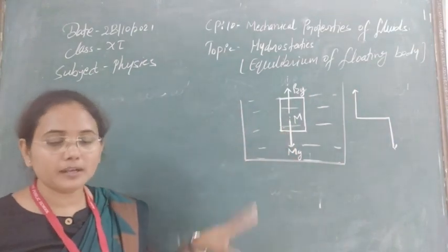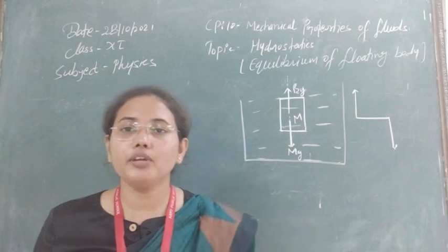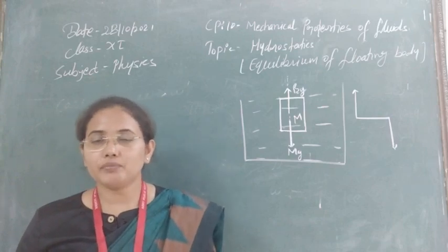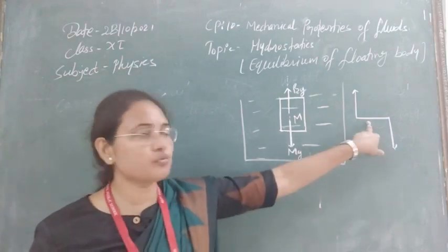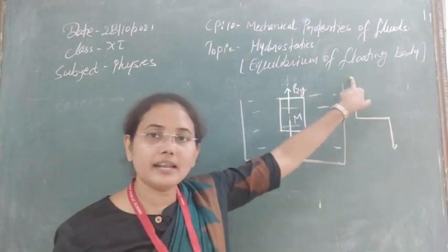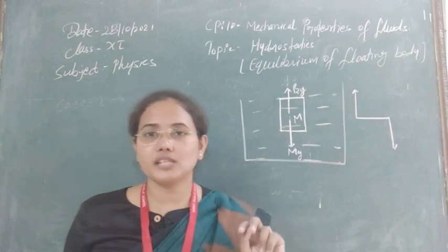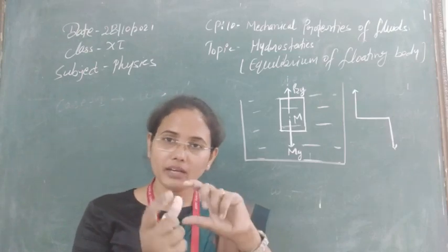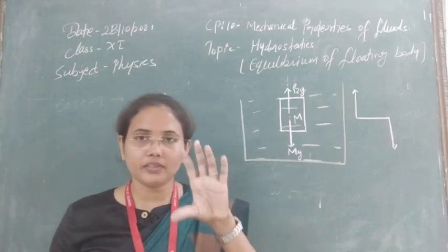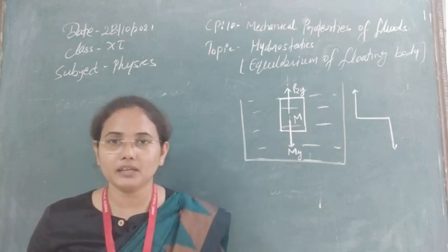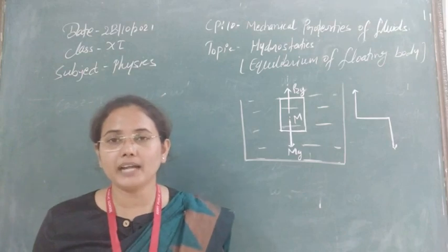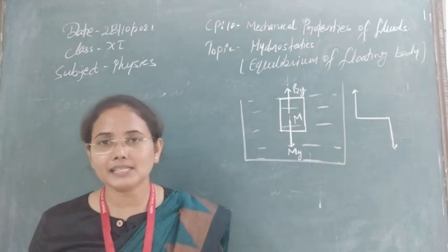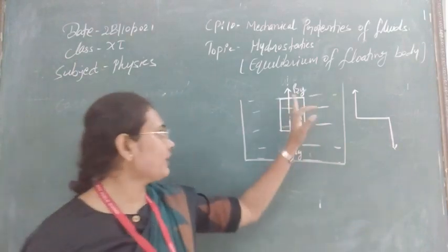In case 3 where W equals W', the net force is zero, but if their lines of action are different, these equal and opposite forces form a couple and the body rotates, making it unstable. To achieve stable equilibrium, the lines of action of true weight and buoyant force must be the same, so no couple is formed.